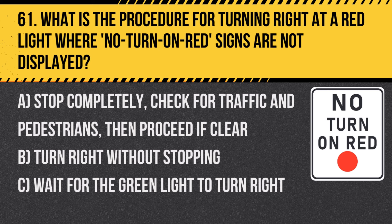Question 61: What is the procedure for turning right at a red light where no turn on red signs are not displayed? A. Stop completely, check for traffic and pedestrians, then proceed if clear. B. Turn right without stopping. C. Wait for the green light to turn right. Answer: A. Stop completely, check for traffic and pedestrians, then proceed if clear. Even without a no turn on red sign, you must stop to ensure it is safe before proceeding.